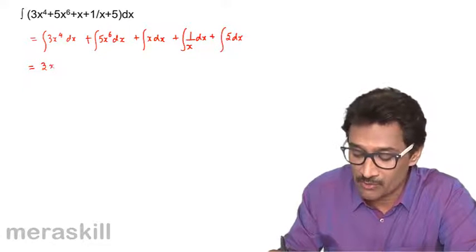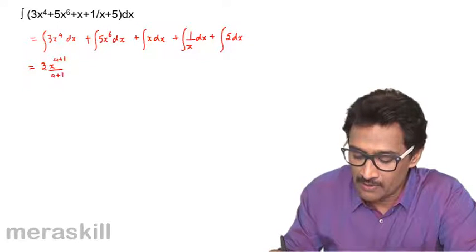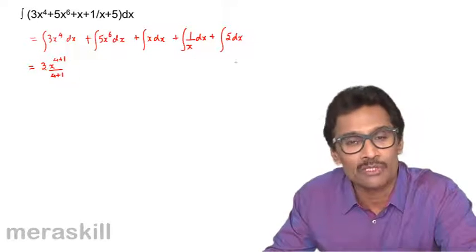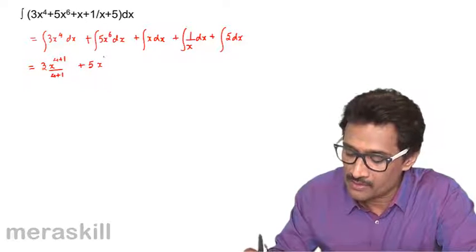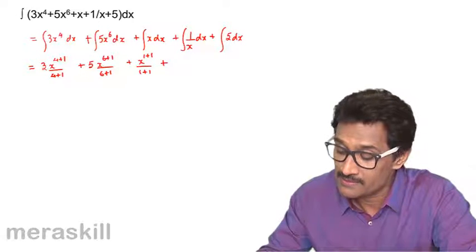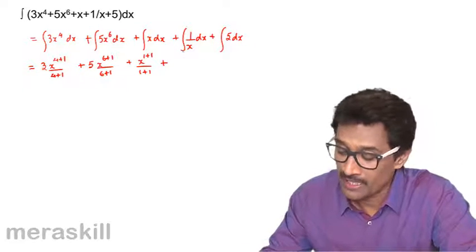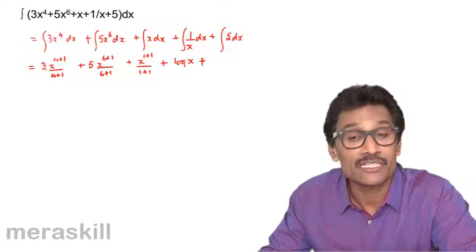This is going to be: 3 comes out of the integration, giving x raised to 4 plus 1 upon 4 plus 1. We write plus k at the end as a common constant. Next term is 5 into x raised to 6 plus 1 upon 6 plus 1, then x raised to 1 plus 1 upon 1 plus 1. Since 1/x integrates to log x, we get log x plus 5x.